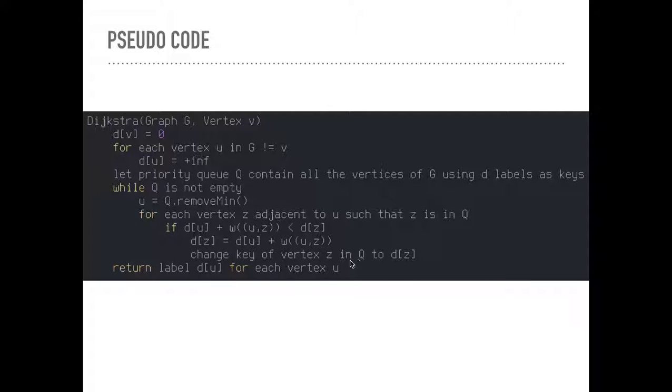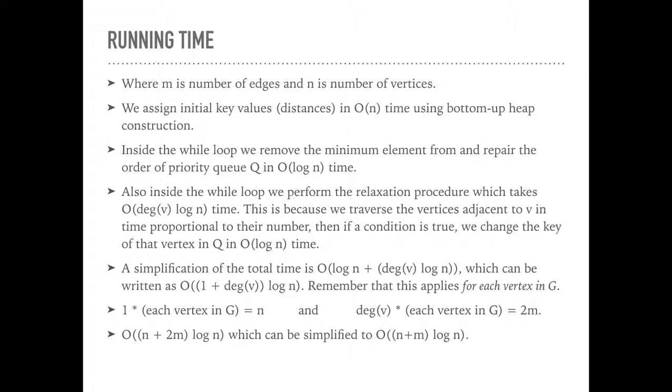And then we changed the key of the vertex Z and Q to DZ. This is actually a not trivial line. It takes some time because of our priority queue. We'll see that in the next slide. And then I just returned all of the distance labels for each vertex.